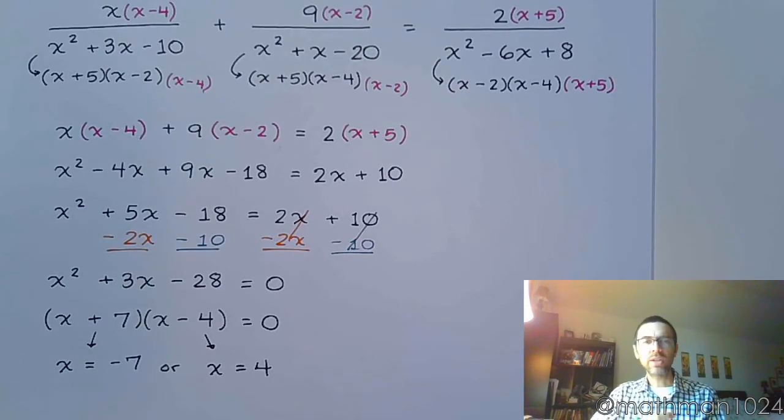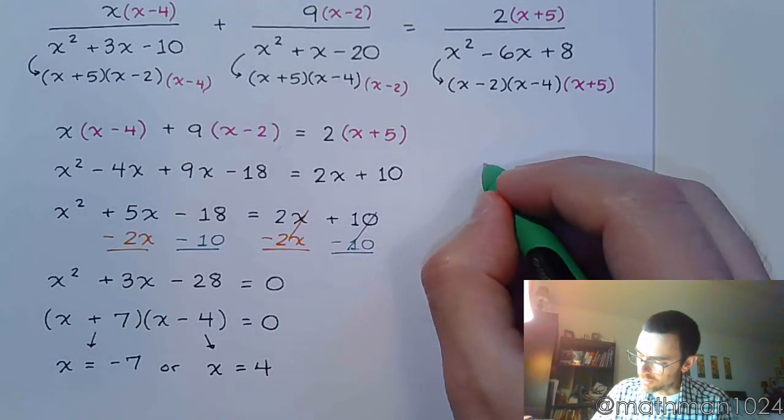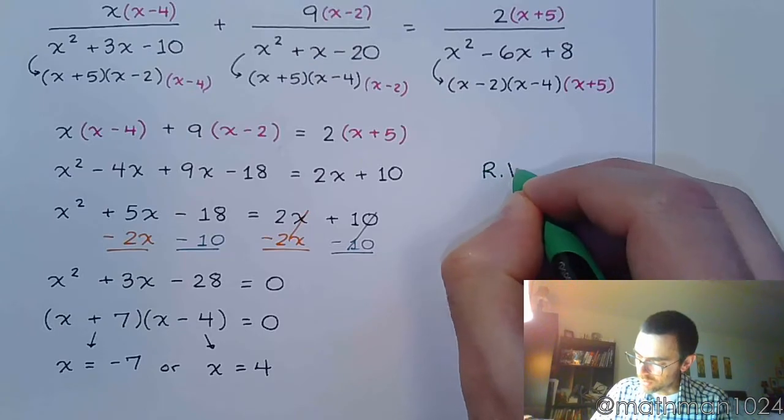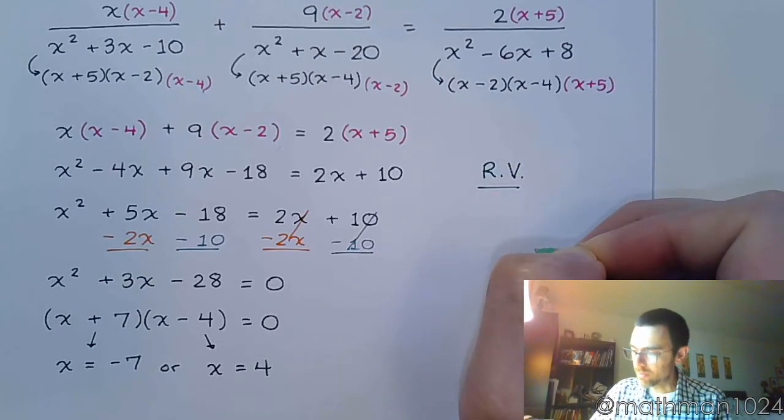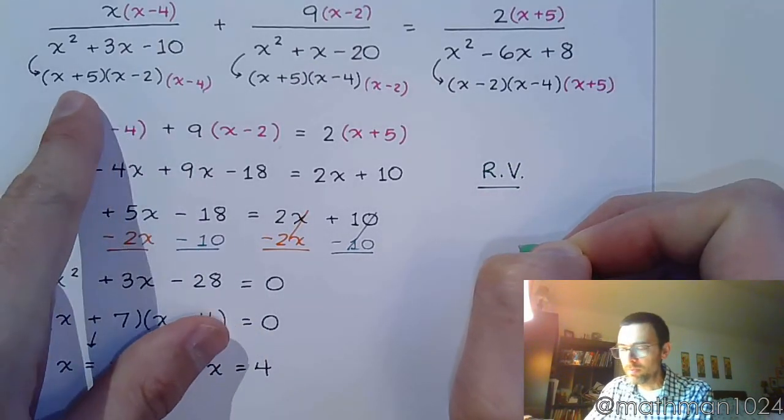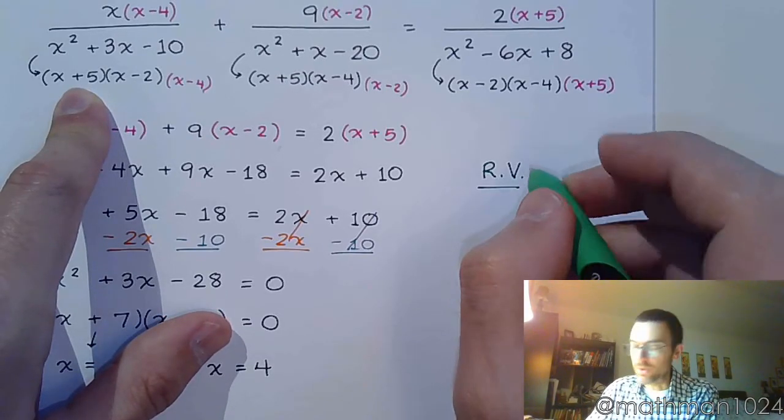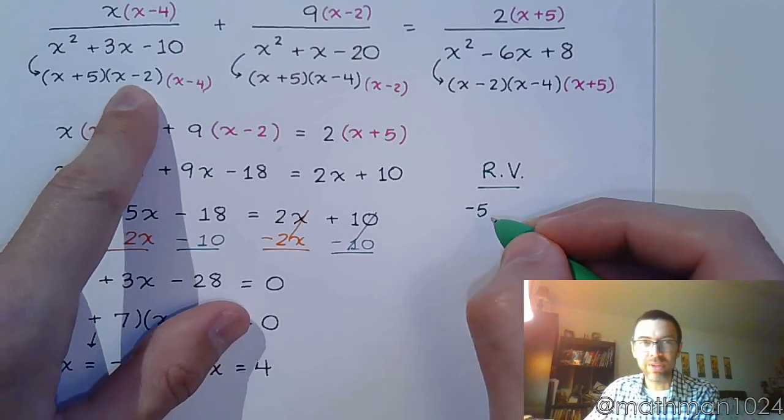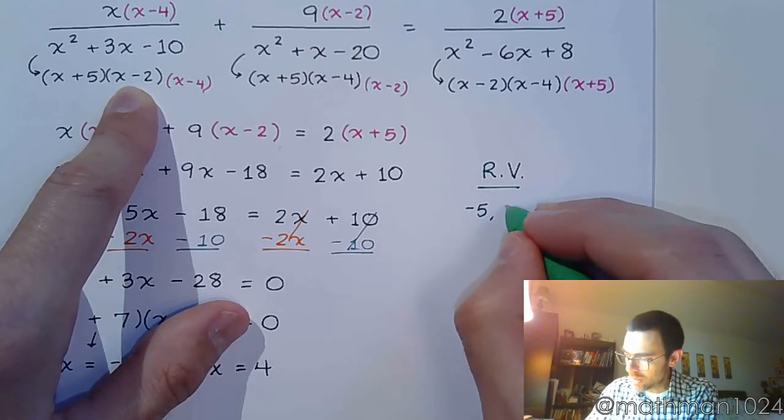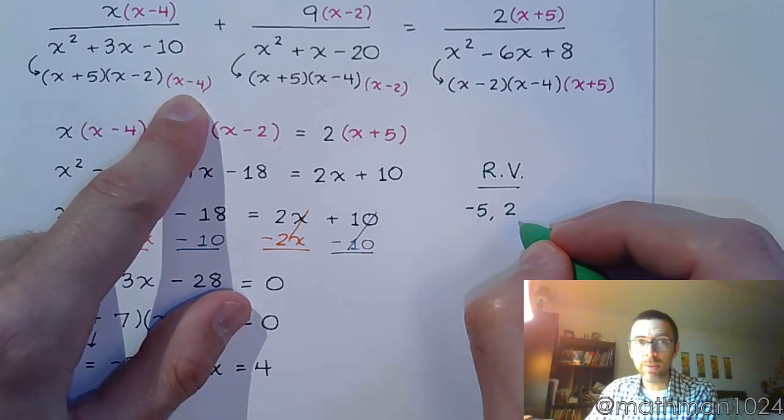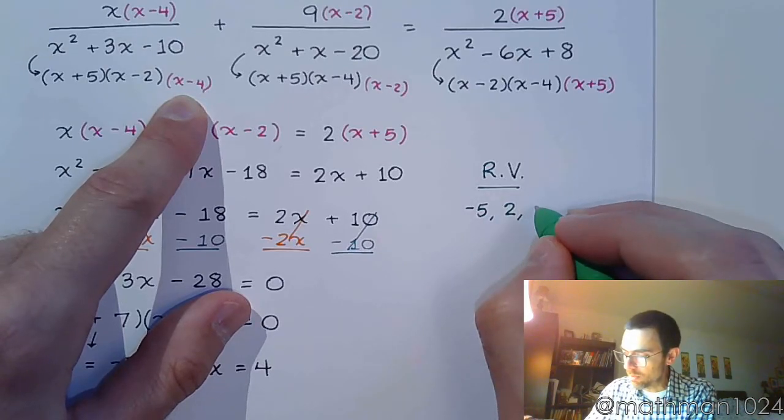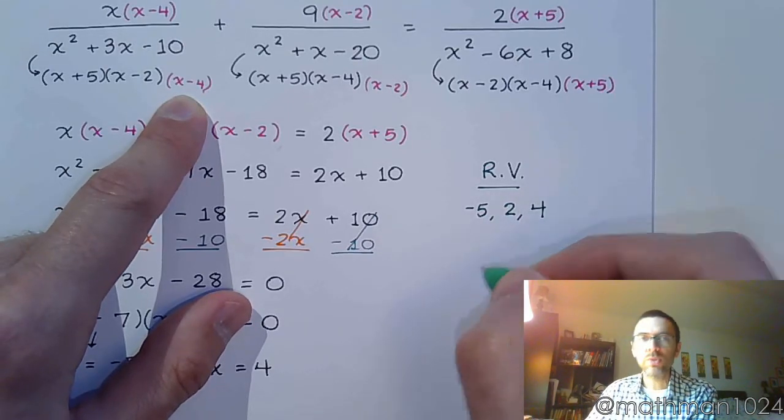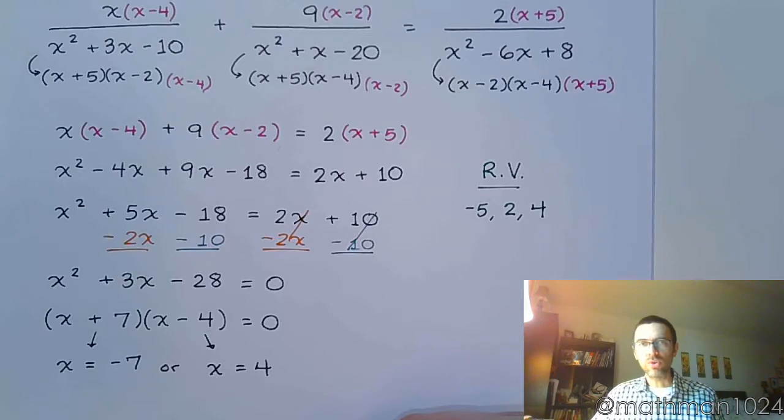But again, before we start boxing everything, we need to make sure that we identify any restricted values. So, looking up here, what would make x plus 5 equal 0? Well, that would be negative 5. What makes this factor equal 0? Positive 2. And how about this guy? Well, that would be positive 4. So, as long as we don't have any of those restricted values as a solution, we're going to be okay.